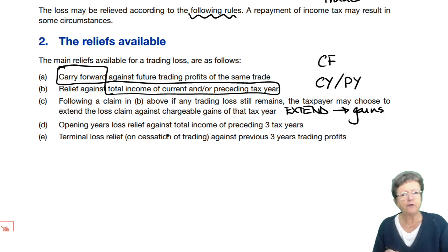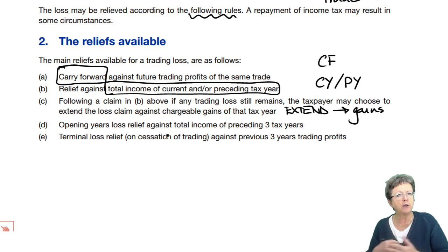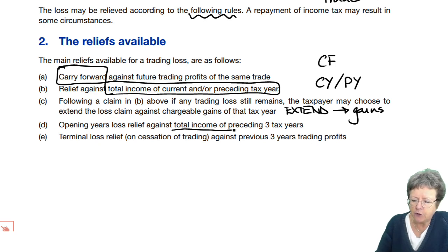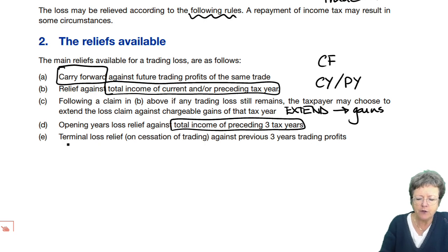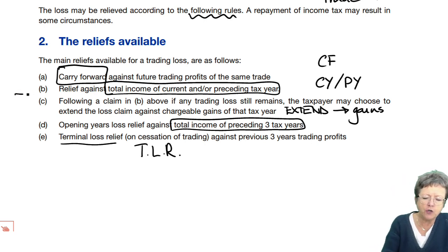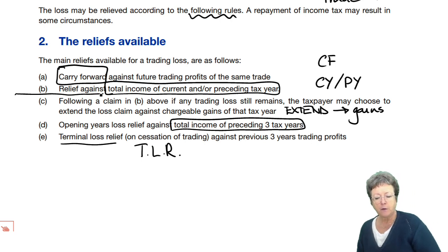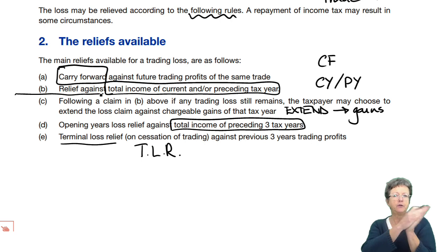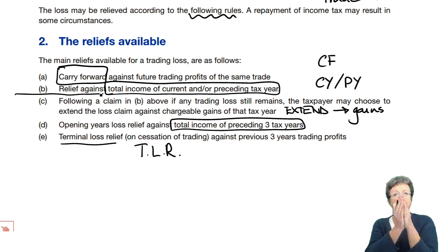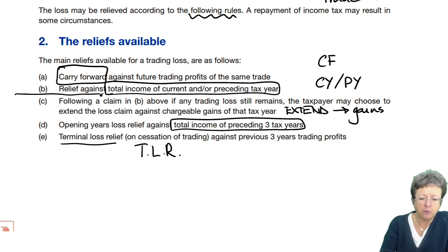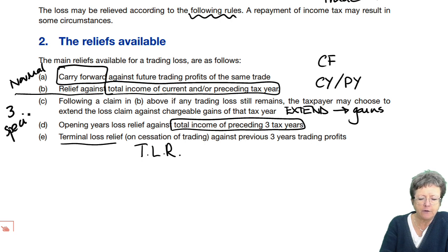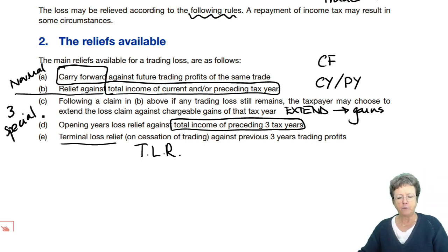Then we have opening years rules — you know when we did basis periods, there are some special rules regarding that when we have a loss in that first set of accounts, and it's against total income. And then there's what's known as terminal loss relief when you cease to trade. So the normal reliefs are: carry forward, current year, previous year. And three special ones: an extension into gains, opening years, and terminal loss relief.